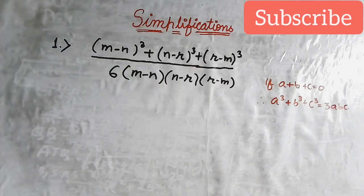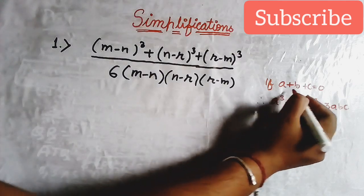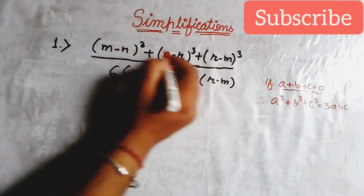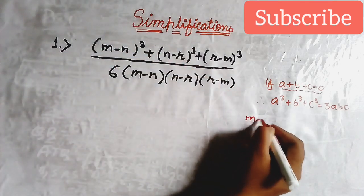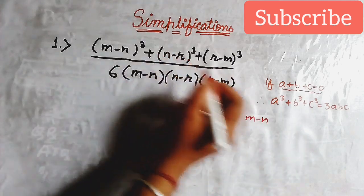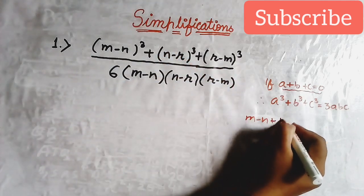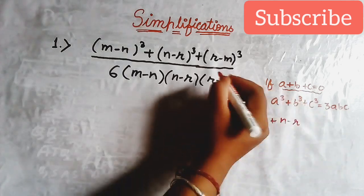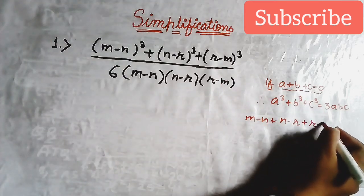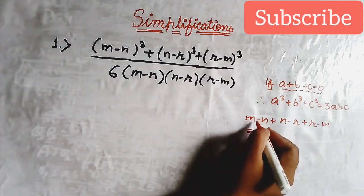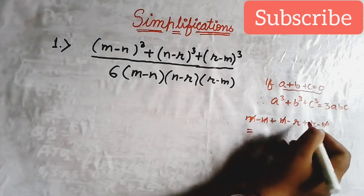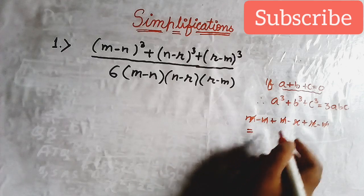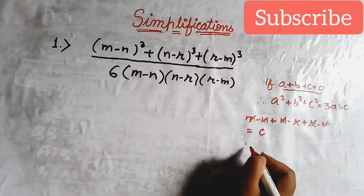You may have studied this in 9th class mathematics and it is important for all types of competitive exams also. Let us verify the numerator: a is (m minus n), b is (n minus r), c is (r minus m). When we add them, m minus m is 0, minus n plus n is 0, and minus r plus r is 0, so the sum equals 0.